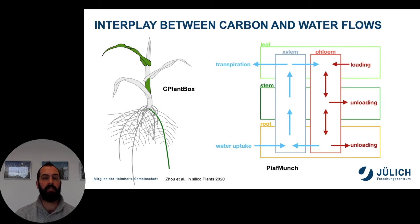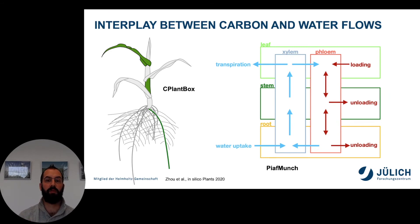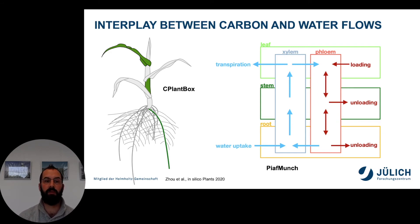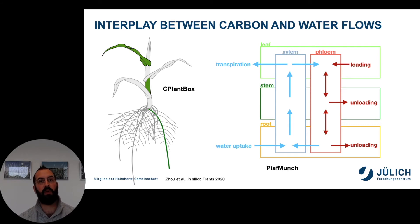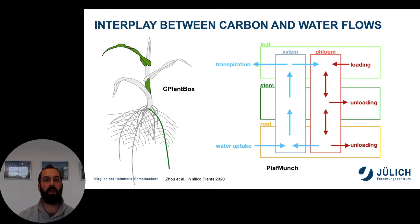How do we conceptualize the interplay between carbon and water? We have two systems on our plant. On the structure of the plant we put a xylem network, which transports water from the soil toward the atmosphere following the gradient of water potential. And we have a second network, the phloem network, which moves carbohydrates within the phloem following osmotic gradients.